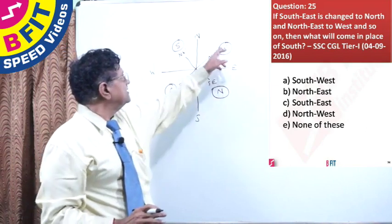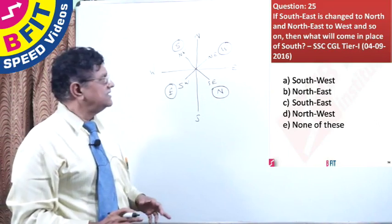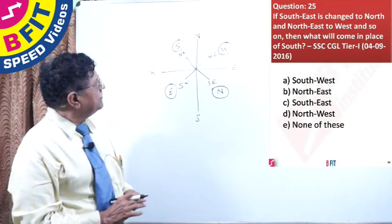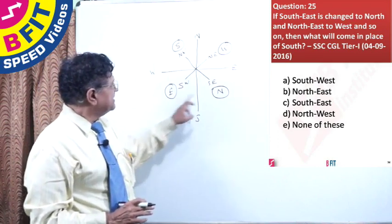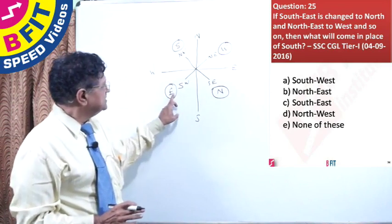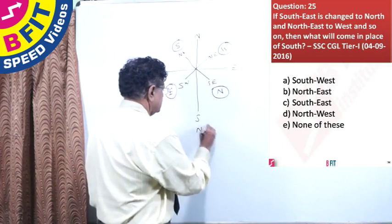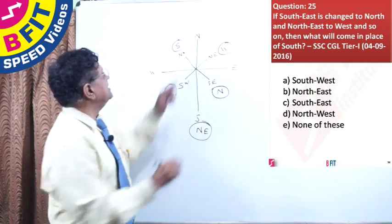Now, what I have put in the circle, that is the revised direction. Now, what is the question? What will come in the place of South? It is in between North and East. So this direction will be North-East. This will be South-West.